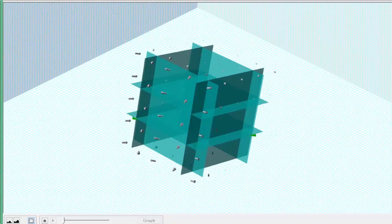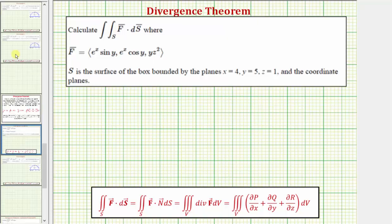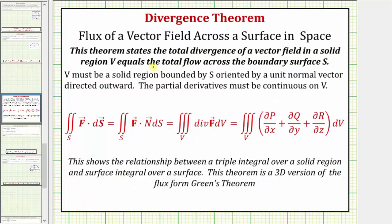We'll evaluate the flux integral using the divergence theorem. The divergence theorem states the total divergence of a vector field in a solid region V equals the total flow across the boundary surface S. The region V must be a solid region bounded by S oriented by a unit normal vector directed outward, and the partial derivatives must be continuous over the region V. Under these conditions, the flux integral is equal to the triple integral over the region V of the divergence of the vector field F differential V, which can also be written in an alternate form. This shows the relationship between a triple integral over a solid region and a surface integral over a surface — this is a 3D version of the flux form of Green's Theorem.